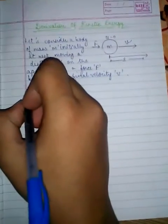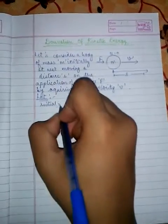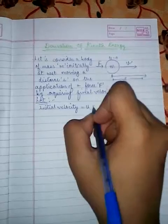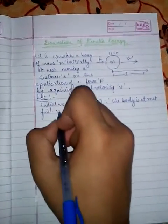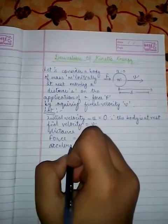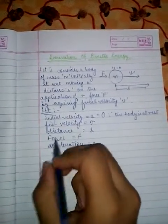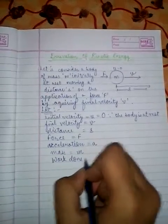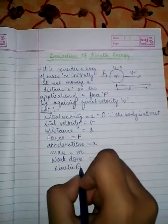So now the variables that you are to write: initial velocity U = 0 because the body is at rest, final velocity = V, distance = S, force = F, acceleration = A, mass = M, work done = W, and kinetic energy = K.E.